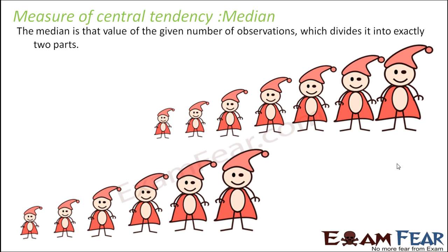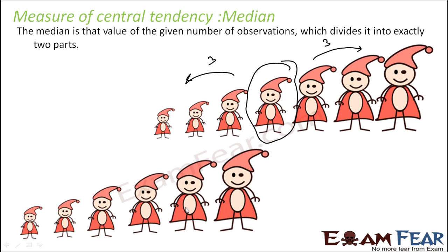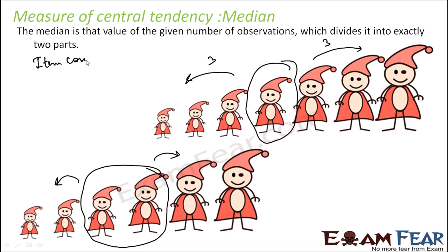Let's understand the concept of median. The median is the value of the given observations that divides it into exactly two parts. For example, if there are seven people, the middle one is the median because three people are shorter than him and three people are taller than him. But if we have six people, then you have to take the average of the two middle ones, and that becomes the median.